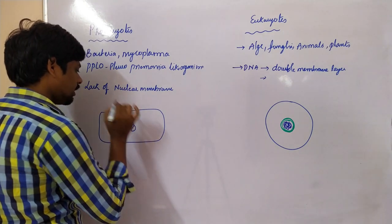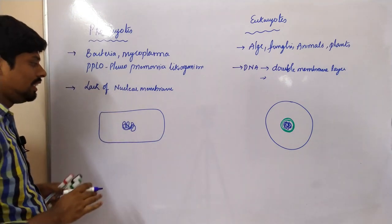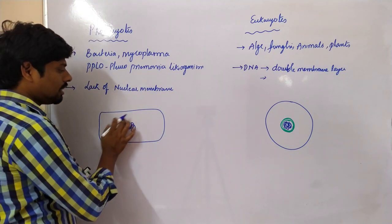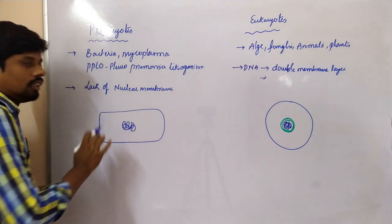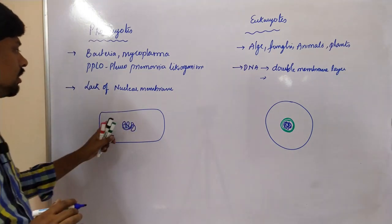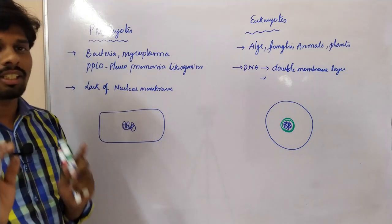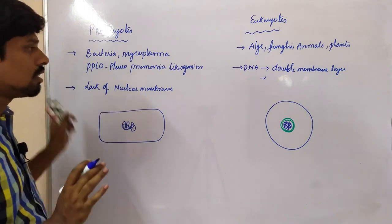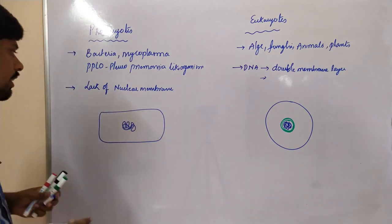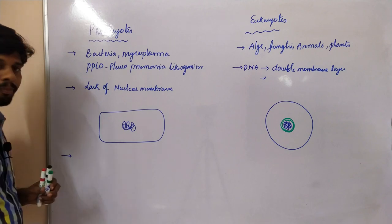In prokaryotes, the DNA is the genetic material, but this DNA does not have any inclusive membrane structure covering it. That is called a prokaryote. Coming to the next point.